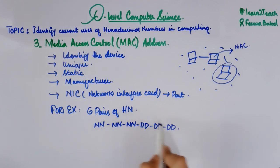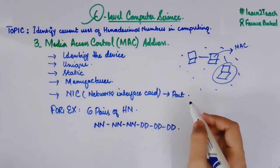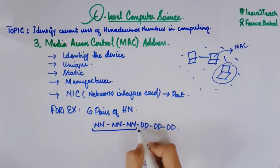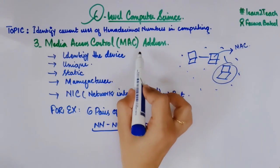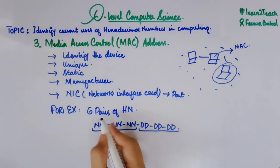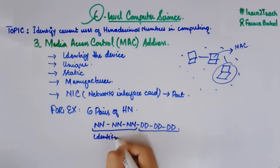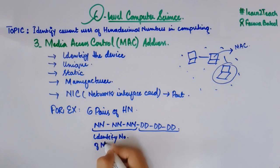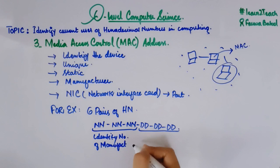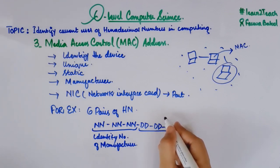A MAC address has 6 pairs of hexadecimal numbers. I have written N, N, N and D, D, D to show the two parts. The upper three pairs — the N values — represent the identity number of the manufacturer, whoever is responsible for developing the device. The lower three pairs — the D values — represent the serial number of that particular device.